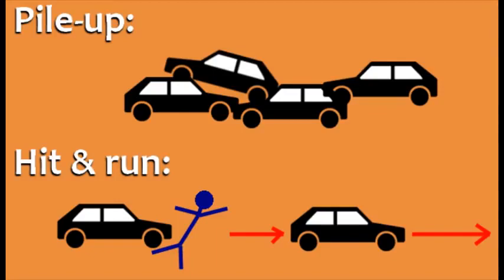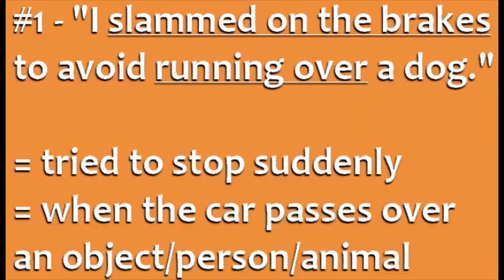Now we'll look at four descriptions of accidents and learn the verbs used for talking about them. Number one: I slammed on the brakes to avoid running over a dog. To slam on the brakes means to try to stop the car very suddenly, often in an emergency. In this case, the driver wanted to avoid running over a dog. The phrasal verb run over is used when a car passes over an object, animal, or person.